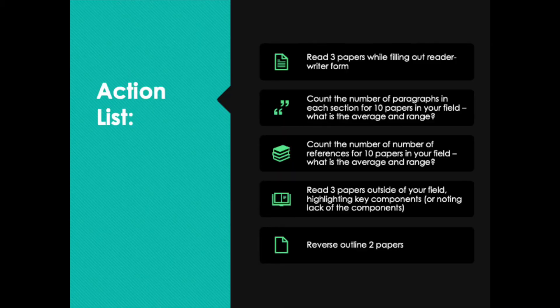The final action item is to reverse outline two papers. Take that classical outline we looked at earlier, and as you read these two papers, go through each paragraph and make an outline of how the authors structured their paper. This helps you think about how papers are put together. It's a companion exercise to the reader-writer form, but a little different — you're looking at the bones of the paper, the structure, how the authors built it.